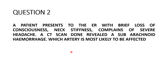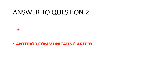The answer is still the anterior communicating artery. When you have a rupture of a berry aneurysm, it bleeds into the subarachnoid space causing subarachnoid hemorrhage. The patient will typically present complaining of the worst headache of their life, along with brief loss of consciousness and neck stiffness.